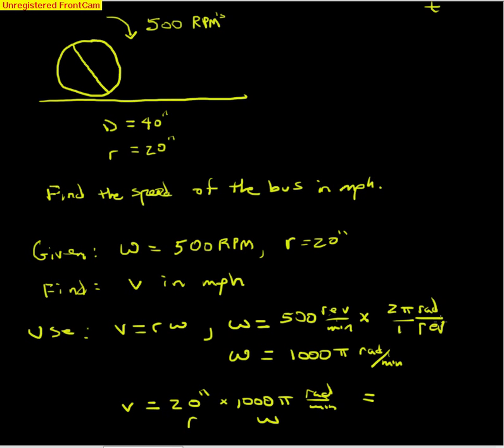The radian unit is dimensionless in that we can include it or not include it depending on what we want for convenience. So it makes sense to use radians per minute here in our omega and inches here, but when we write out what our v is, we'll ignore the radians and just write it as inches per minute. So we end up with 20,000π inches per minute.